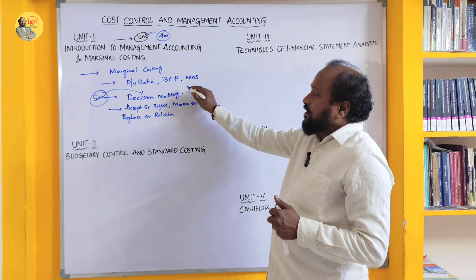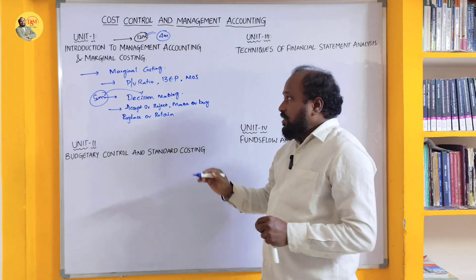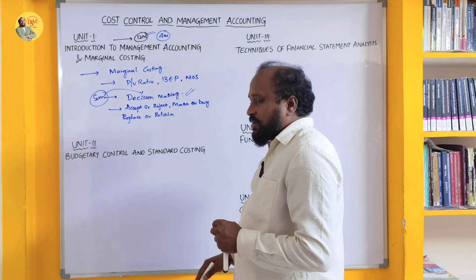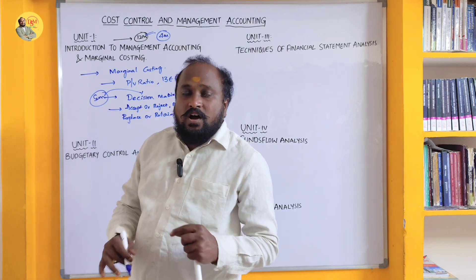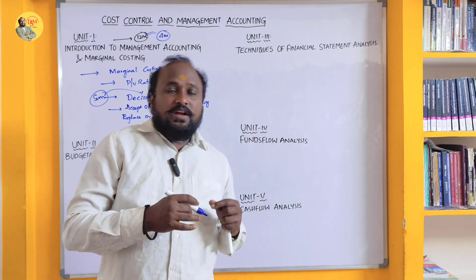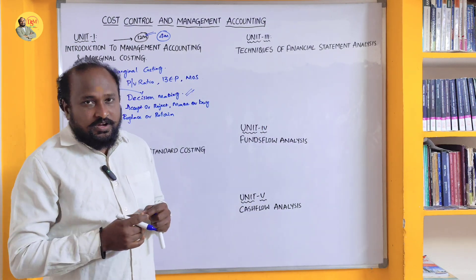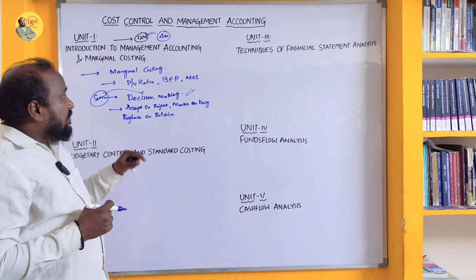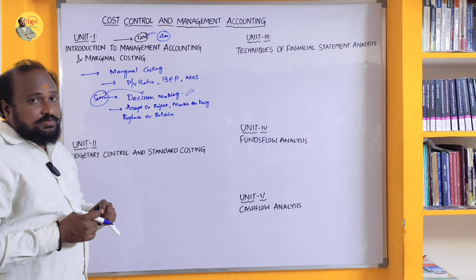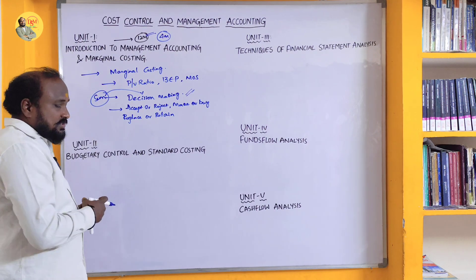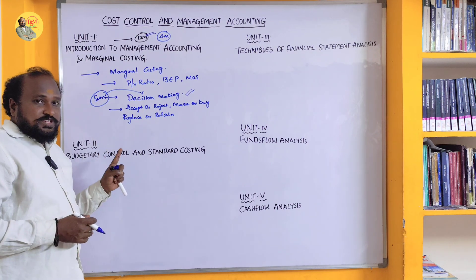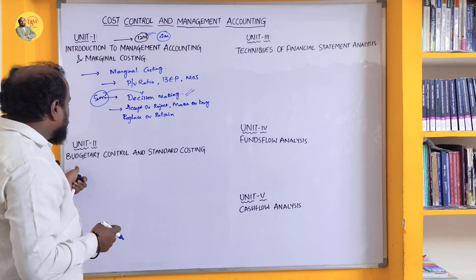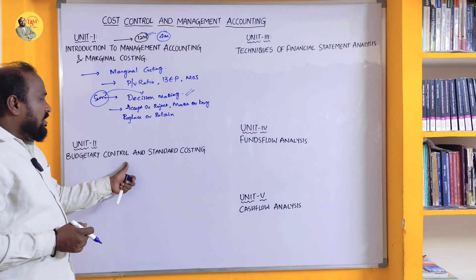For students who are very weak in accounts, go with Decision Making, because P/V ratio, BEP, and MOS involve more formulas to learn. For students who enjoy accounts, Marginal Costing will be more interesting. Go with both chapters if possible. The chance of a question not coming from these is very low.